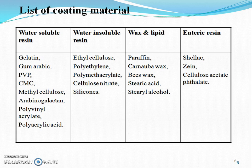Coating materials are basically divided into four categories. Water-soluble resins consist of gelatin, gum arabic, PVP, CMC, methyl cellulose, etc.